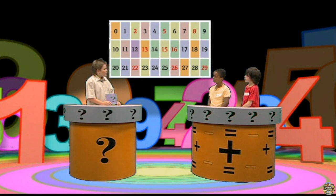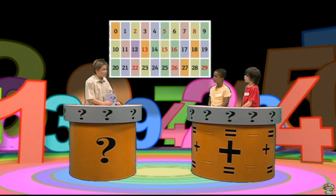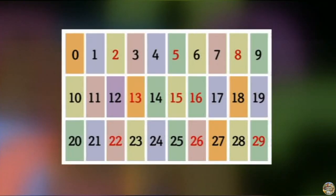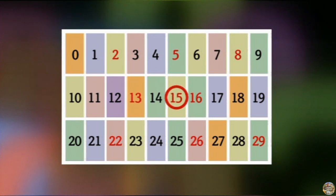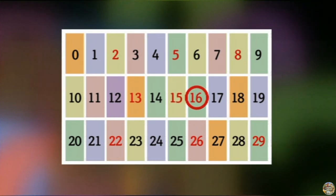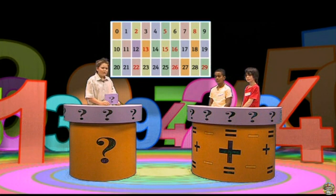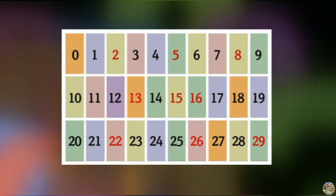Now, both of you — using a number rectangle, what is the easy way to find a number eleven more than another number? I got it! You move down a row and then go right. Show us. Well, you start at five, then you go down a row to fifteen, and then you add one, which is sixteen. Yes, Chris, you got the answer right today. But how about you out there — can you answer this question? Using a number rectangle, what is the easy way to add twenty-two? Good luck, and cheerio!